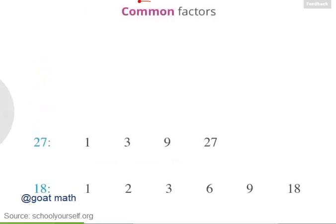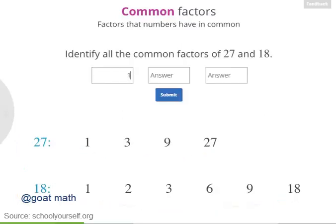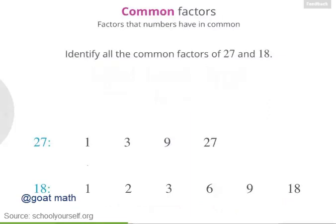Now in this lesson, we'll be talking about common factors. Common factors, as the name suggests, are factors that numbers have in common. So go ahead and identify all the common factors of 27 and 18 — in other words, which numbers appear in both of these lists of factors? Nicely done. So 1 appears in both lists, as do 3 and 9. So the common factors of 27 and 18 are 1, 3, and 9.